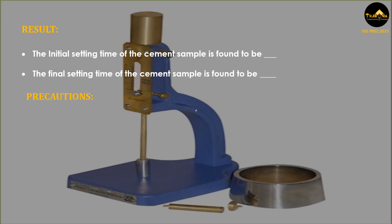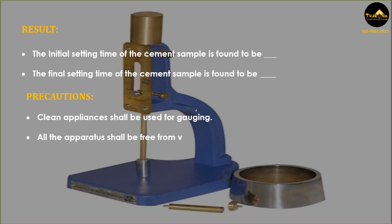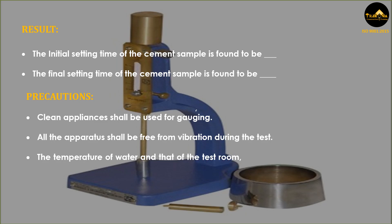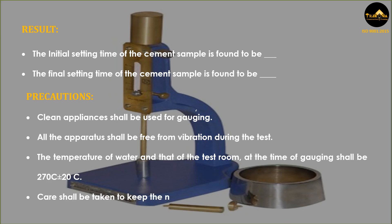Precautions: Clean appliances shall be used for gauging. All apparatus shall be free from vibration during the test. The temperature of water and that of the test room at the time of gauging shall be 27°C ± 2°C. Care shall be taken to keep the needle straight.